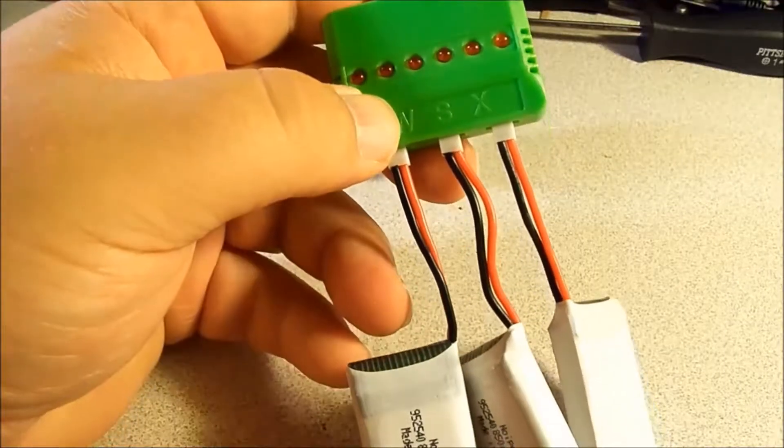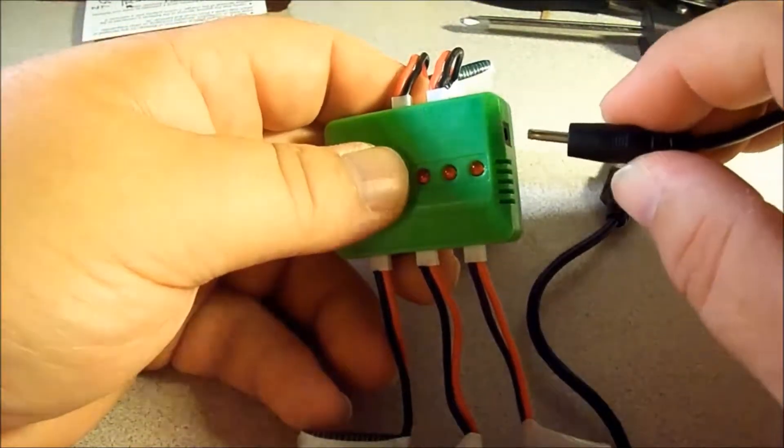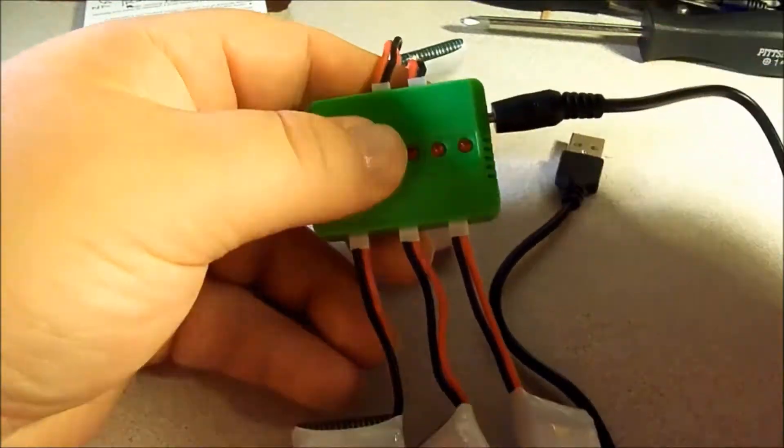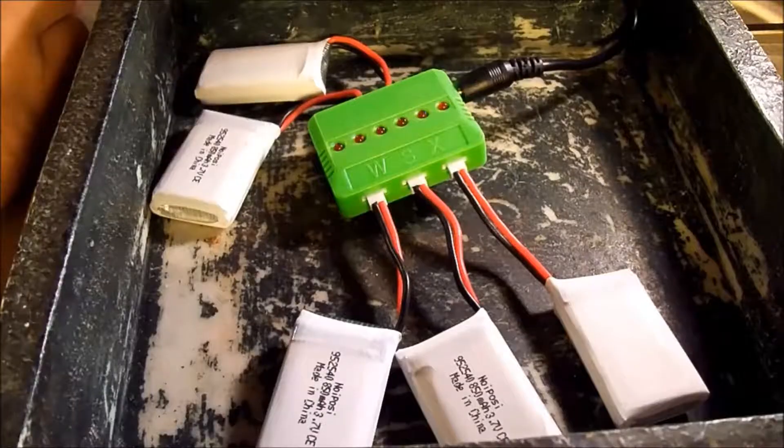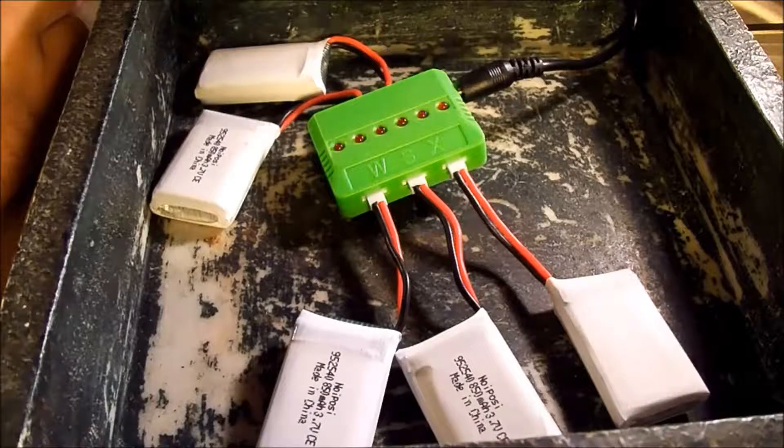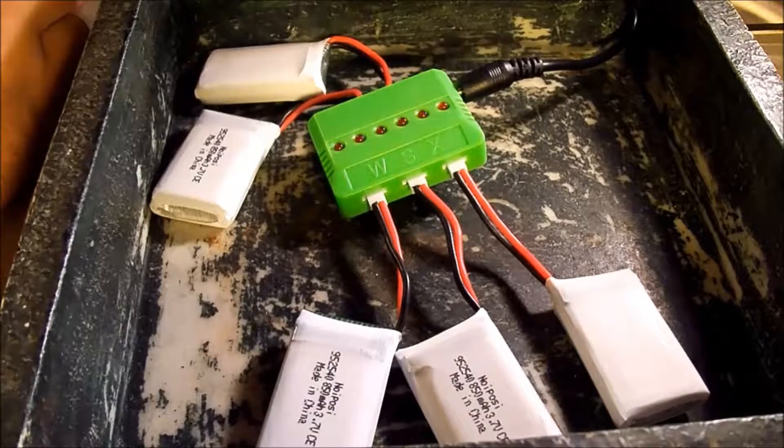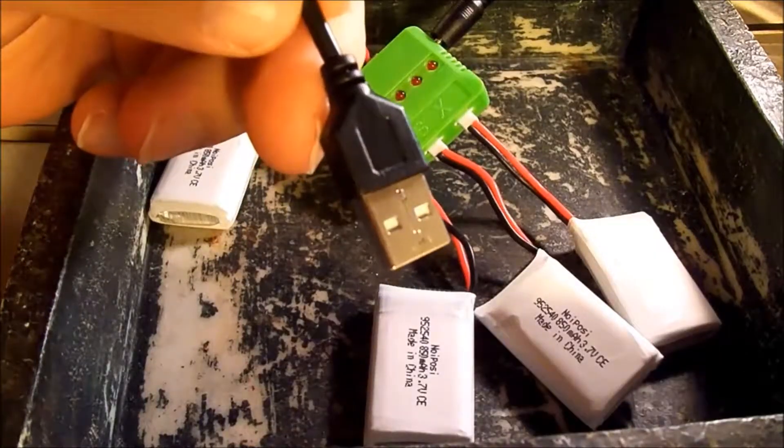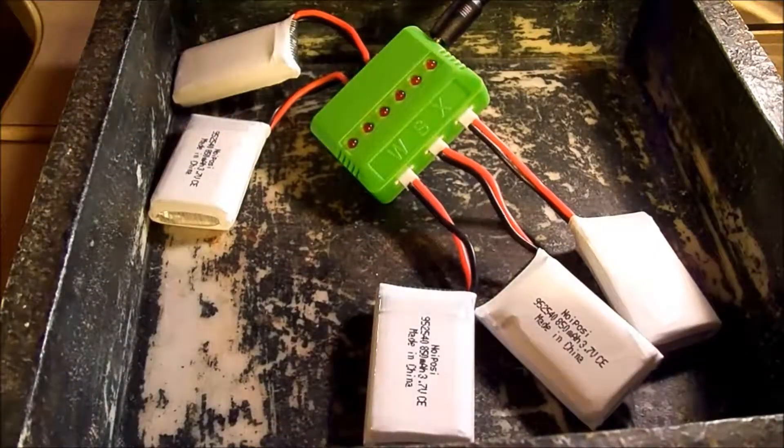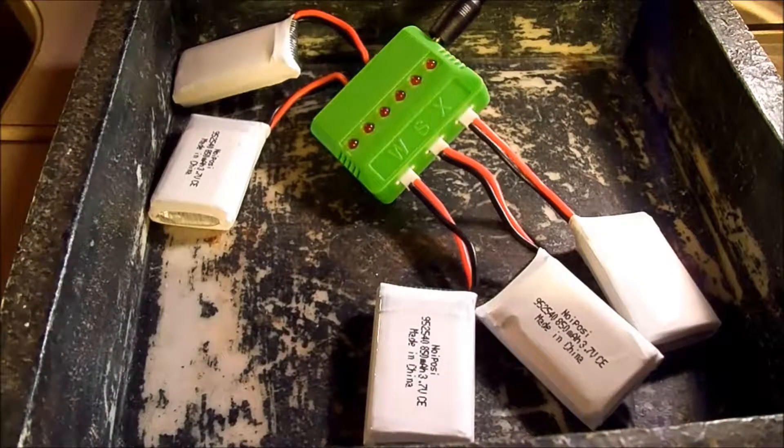Now that we've got our batteries plugged into the charger, all we need to do now is plug in the charging cable. Now we're ready to charge. I like to charge my batteries in some kind of a fireproof enclosure. Safety first. Now we're ready to plug our USB charging cable into the USB wall wart.